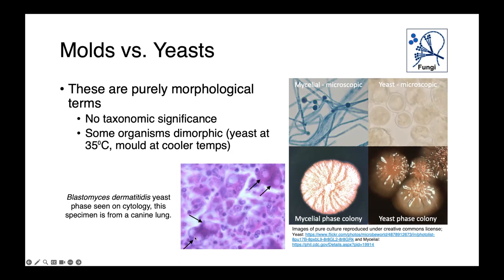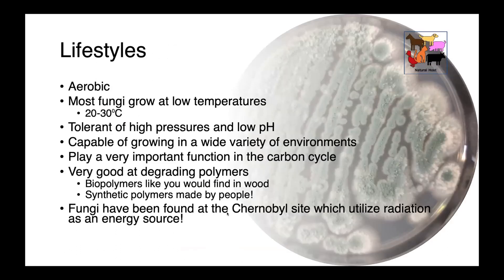In this image here, you can see the yeast forms growing within the body. Remember, we have higher temperatures, so when we get infections with these organisms, this is the life stage that they convert to. Fungi are aerobic, and most of them grow at lower temperatures, between 20 and 30 degrees Celsius. They're tolerant of high pressures and low pH, so they're very resilient and capable of growing in a wide variety of environmental conditions.